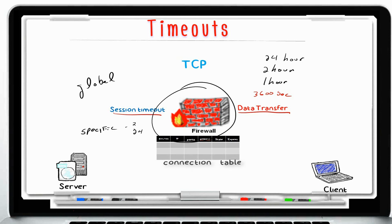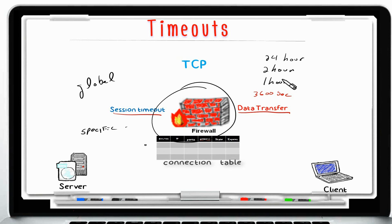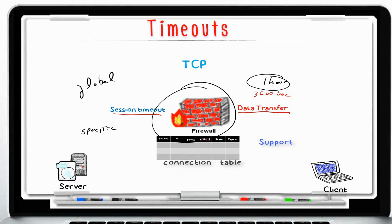Conversely, you can set all services to timeout in two or 24 hours via the global setting, and have only one specific service timeout in one hour — though this last option is not suggested and is used here for teaching purposes only. It is recommended to keep the global setting at the default of one hour. Only if you run into issues with a specific service, and with the assistance of Check Point Senior or Escalation support, might you be advised to increase or decrease the timeout for that service.